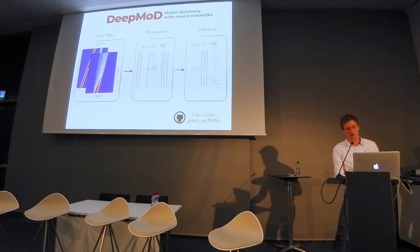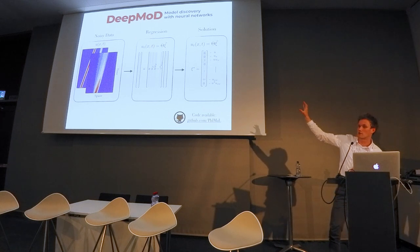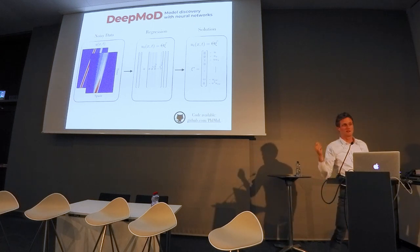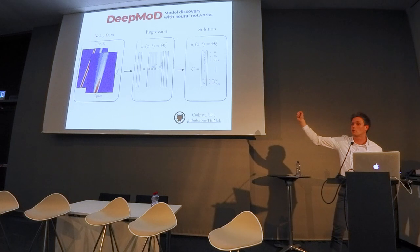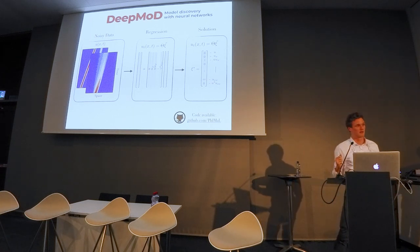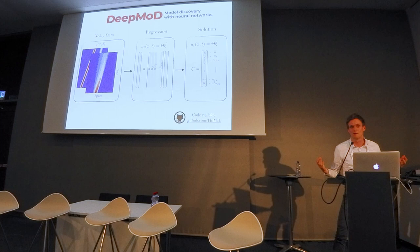This is just a regression problem. The goal is to discover a sparse solution of this vector xi. This vector contains a lot of zeros and some non-zero terms, and these non-zero terms tell you which terms and to what extent feature in the partial differential equation. We're looking for a sparse solution because typically in physics, the hope is that if you have a model that doesn't contain too many terms, it's more interpretable.